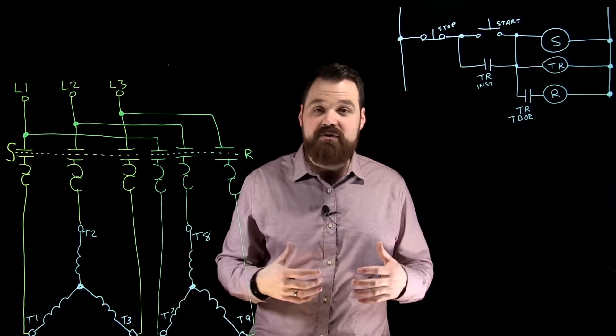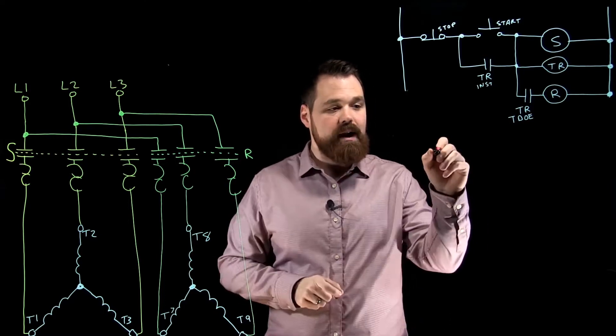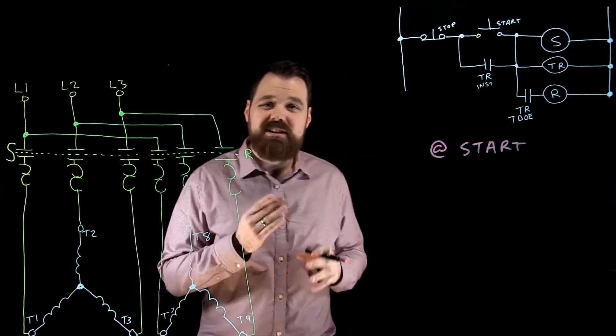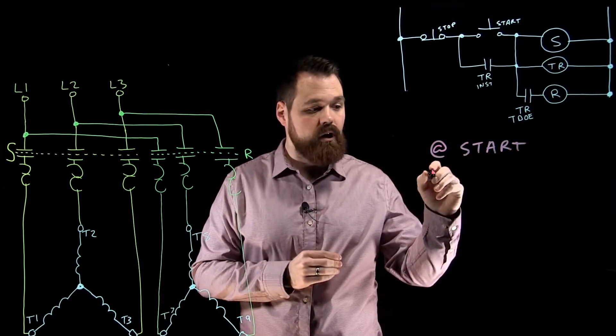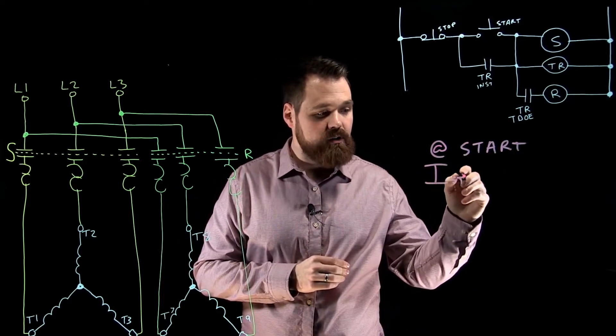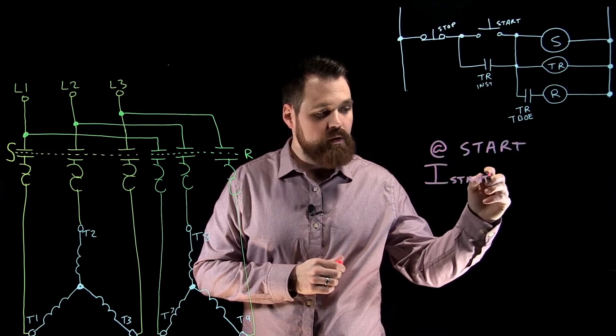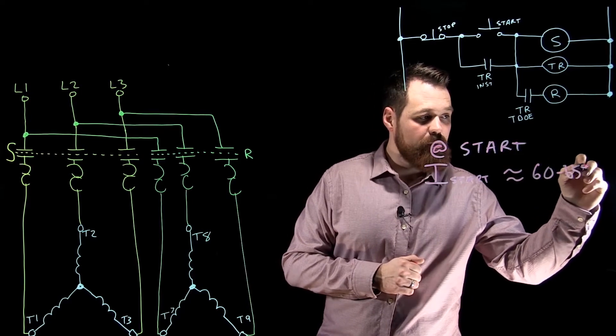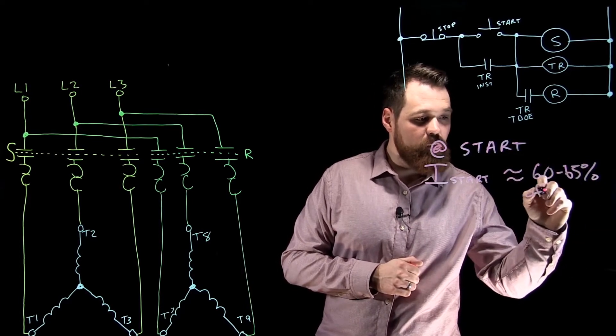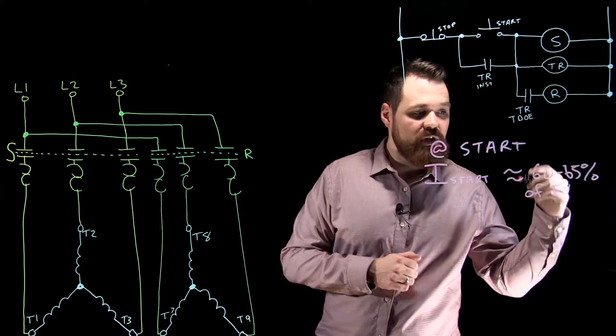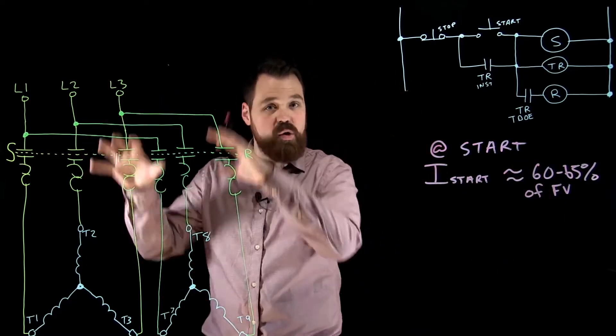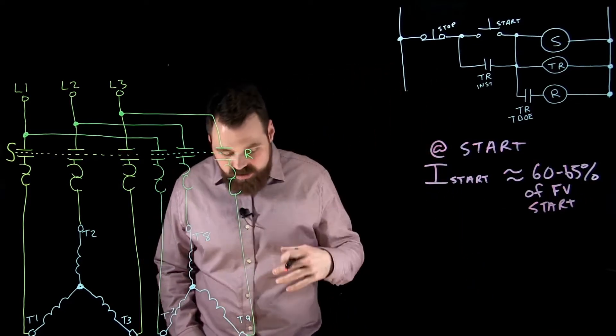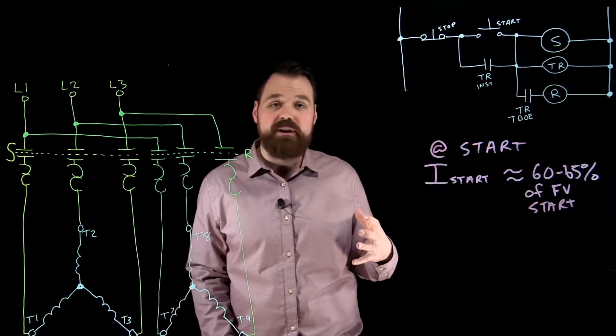So what this gives us at start is our current, our I at start, is approximately 60 to 65% of what it would be at full voltage if you were to just start this motor with both windings at the same time, full voltage start. So we can see that great reduction in current, which is really good for us.